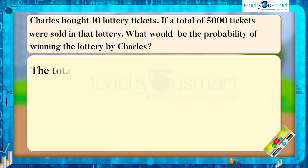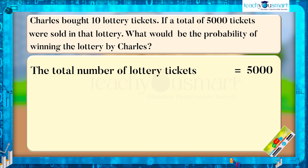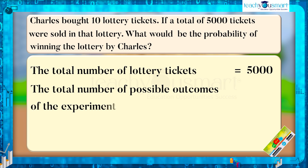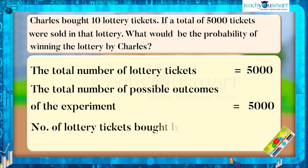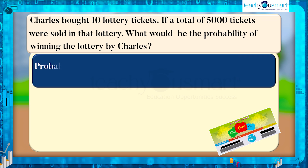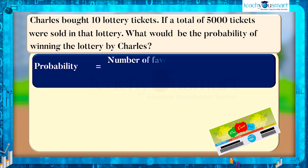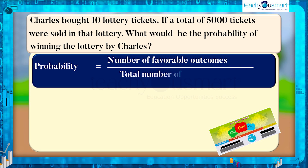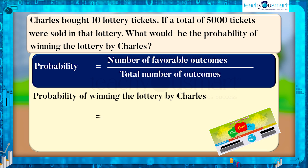Here, the total number of lottery tickets equals 5,000 — that is, the total number of possible outcomes of the experiment equals 5,000. The number of lottery tickets bought by Charles equals 10, that is the number of favorable outcomes equals 10. Therefore, the probability of an event equals the number of favorable outcomes divided by the total number of outcomes. That is, the probability of winning the lottery by Charles equals 10 by 5,000 equals 1 by 500.